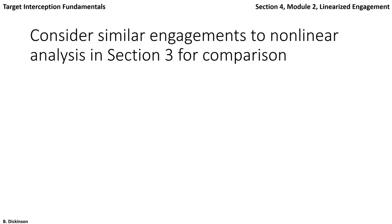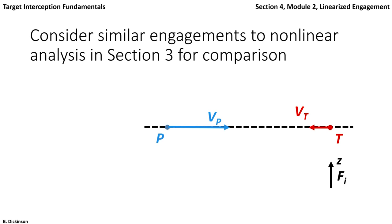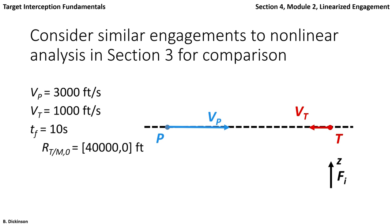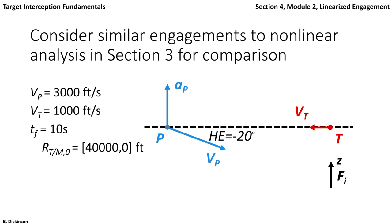We'll consider similar engagements to the nonlinear analysis of the previous section. The pursuer and target are initially on a head-on collision course, with the pursuer three times faster than the target. Ten seconds is the total elapsed time for this simulation, based on the range equation for the linear simulation, which puts them initially separated at 40,000 feet. Two cases of disturbances are separately considered: heading error and target maneuver.